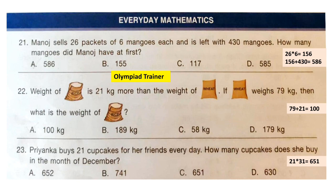Question 23: Priyanka buys 21 cupcakes for her friends every day. How many cupcakes does she buy in the month of December? December has 31 days, and she buys 21 cupcakes every day, so we multiply 21 by 31 to get the answer.